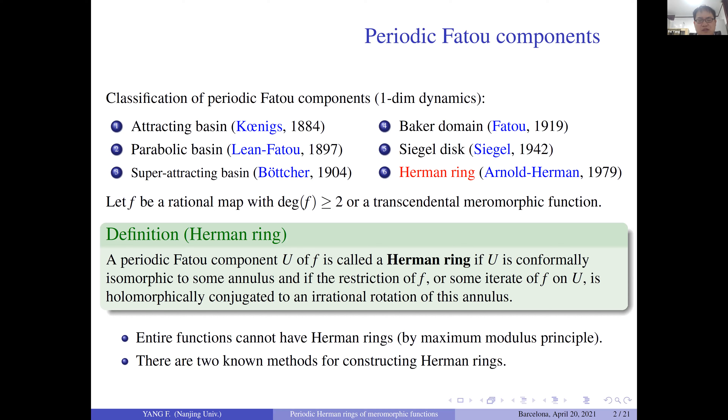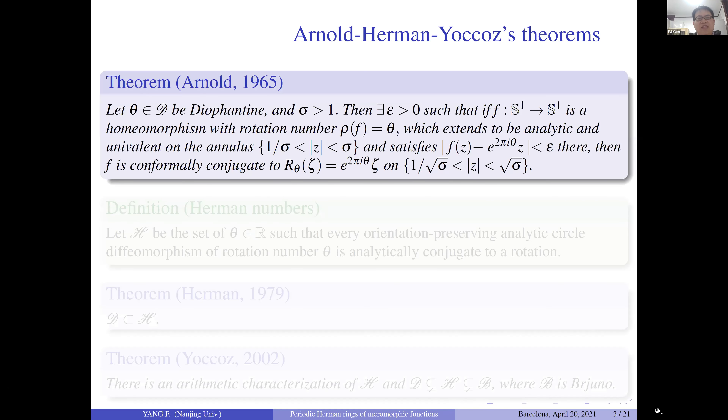It is well known that entire functions cannot have Herman rings. And there are two main methods for constructing Herman rings.